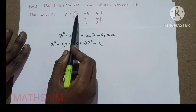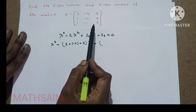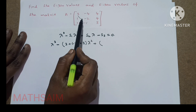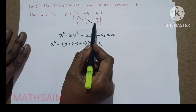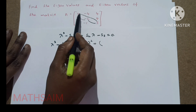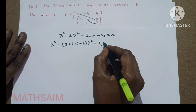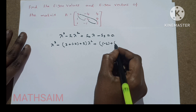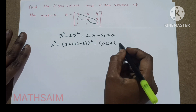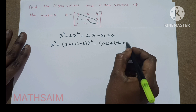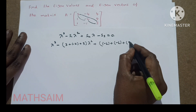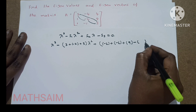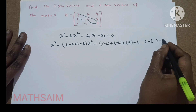S2 is the sum of the minors of the main diagonal elements. To save time, we take the first two elements, then the next two, then the last two. So: 3 times minus 2 is minus 6, plus minus 2 times 3 is minus 6, plus 3 times 3 is 9.